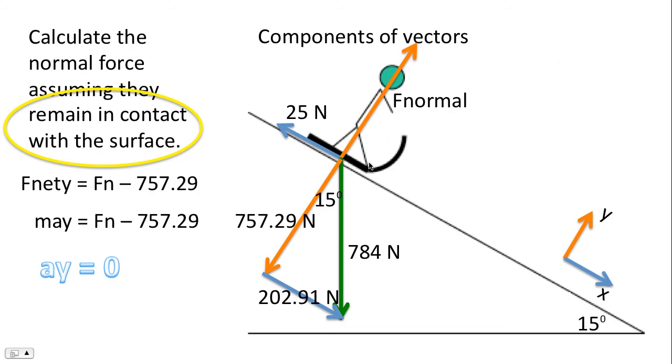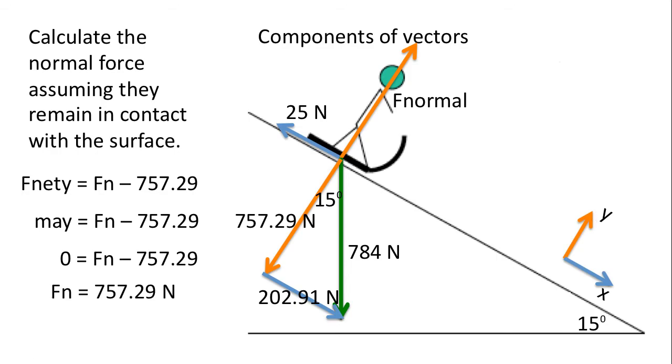It's zero because we assume that it's remaining in contact with the surface at all times. This sled will not go up or down. It's not going to bounce along this plane. It's not going to bounce along the hill. Instead, it's going to remain firmly in contact with the surface. Therefore, the acceleration of the y direction is zero. So we substitute that value. And normal force is equal to the component of gravity in the y direction.